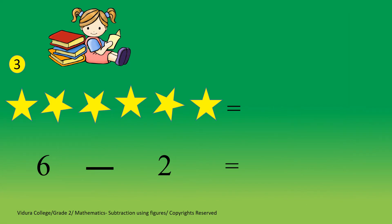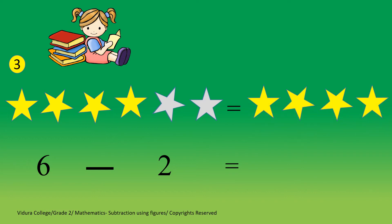Question number 3. There are 6 stars and we have to take away 2 stars. 1, 2. Now how many stars are remaining? 4 stars. 6 minus 2 equals 4.